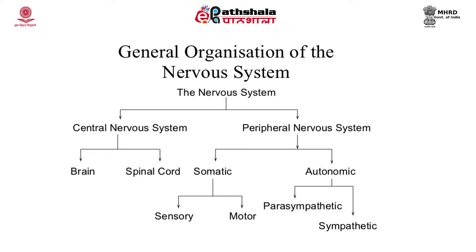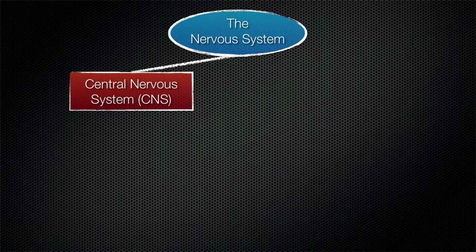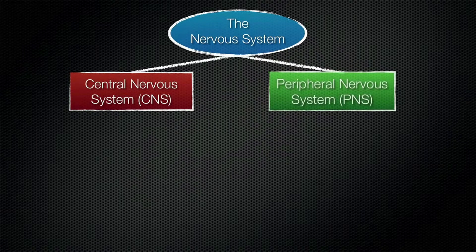This module is a very preliminary module where you will learn how the nervous system and the brain are organized, what are the cells which are present, what are their types and what are their functions. The nervous system is a complex organ with divisions into the central nervous system and the peripheral nervous system.